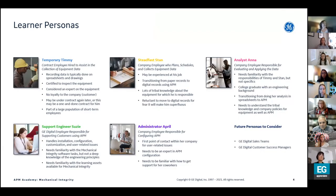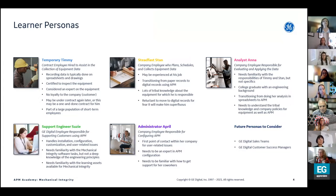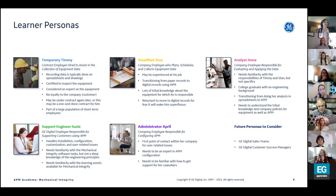I identified quite a few learning personas. Focusing on five briefly: we have Temporary Timmy, a contract employee hired to assist with data collection. He is used to recording data on spreadsheets, drawings, and pieces of paper. He's educated and certified on the equipment and is considered an expert, but he has no loyalty to the company. This may be a one-and-done contract, yet he is part of a large population of short-term employees who affect business outcomes.